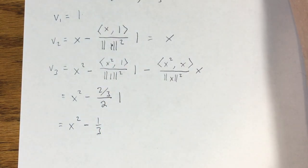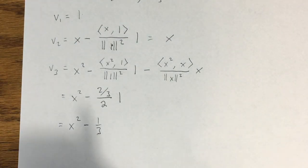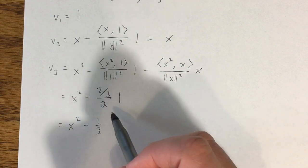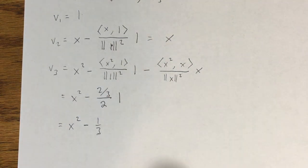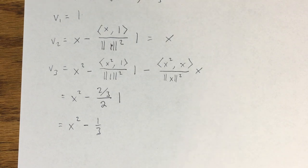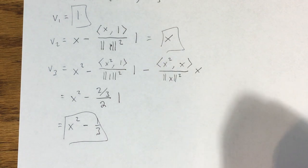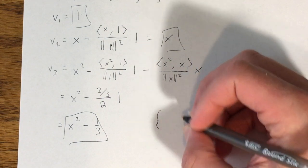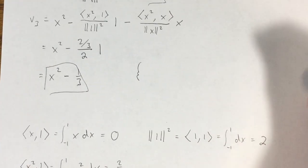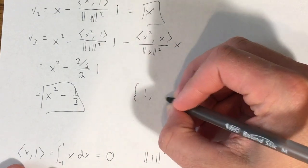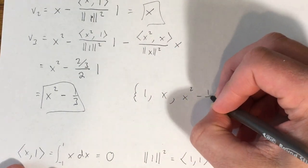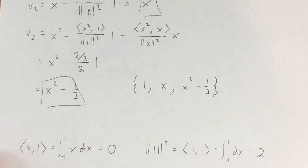So the three basis vectors form our orthogonal basis. If I write them all into one set, it's {1, x, x² - 1/3}. That's an example of using the Gram-Schmidt process in something other than Rn.